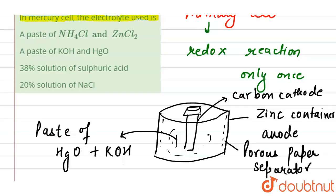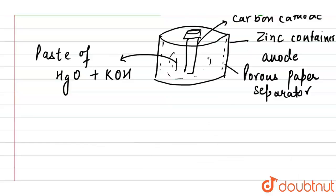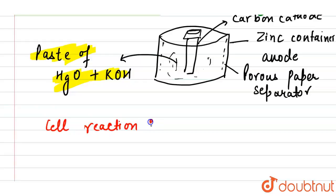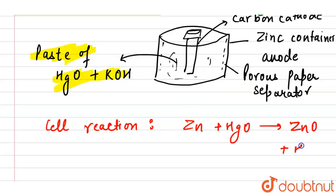So the zinc container is our anode, the carbon cathode is our cathode, and our electrolyte is the paste of HgO and KOH. The cell reaction in the mercury cell is: Zn + HgO → ZnO + Hg. It is mainly used in hearing aids and watches.